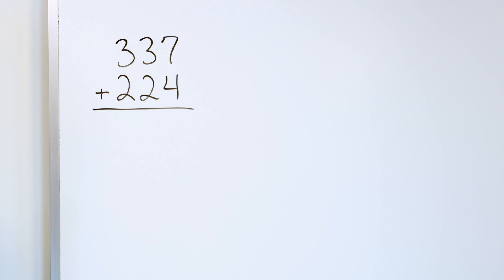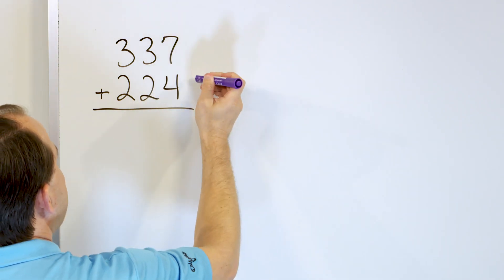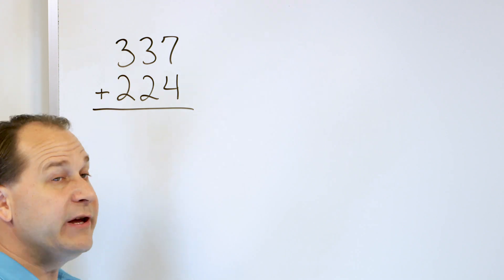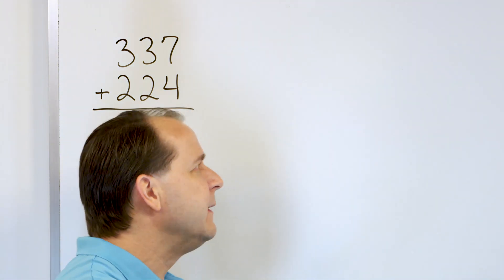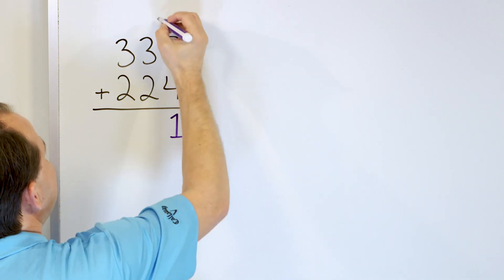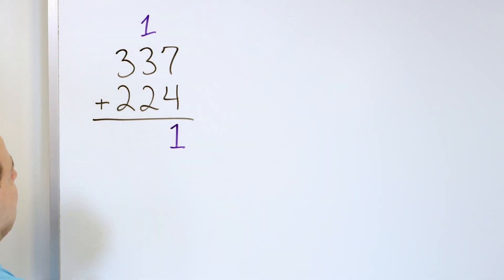So here we have 7, we're going up 4 more, that's 8, 9, 10, 11. So here we have an 11, we can't write a 2-digit number down in a single column. So what we've done in the past is we've put a 1 here, and we carry the 1 to the next column, that's our 11.